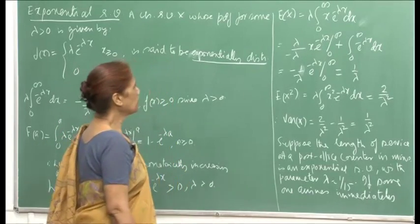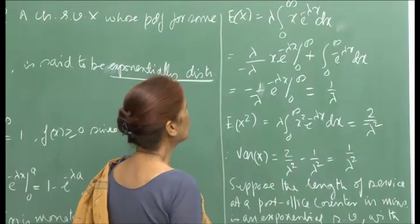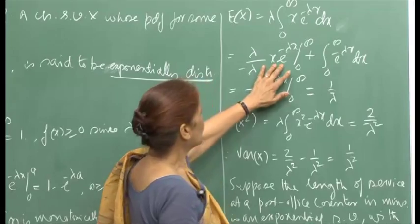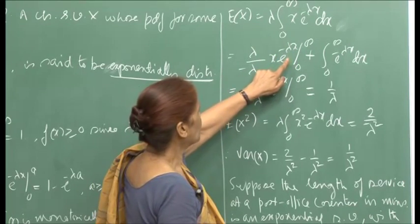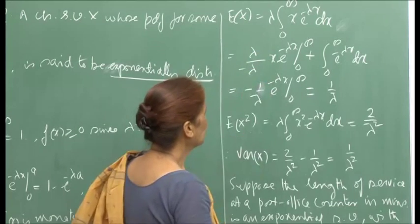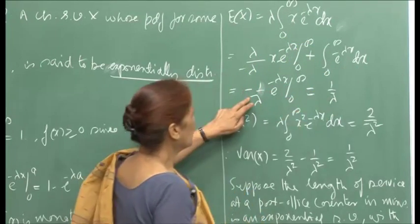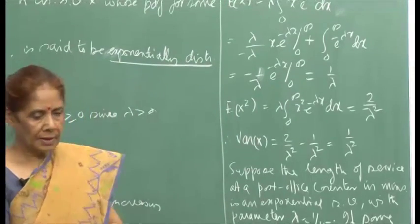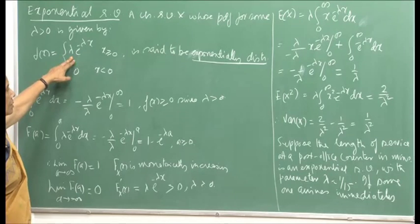The expectation is the integral from 0 to infinity of x lambda e raised to minus lambda x dx. By integration by parts, treating x as the first function, the boundary terms vanish since at 0 the product is 0, and at infinity e raised to lambda x grows faster than x. The remaining integral gives 1 by lambda. So the inverse of the parameter is the mean.